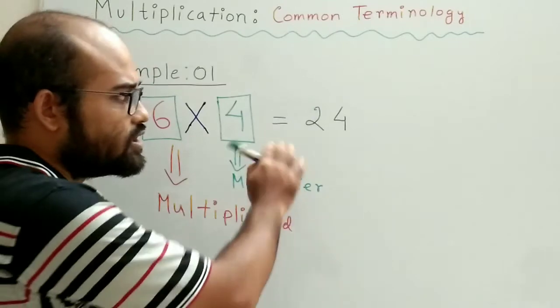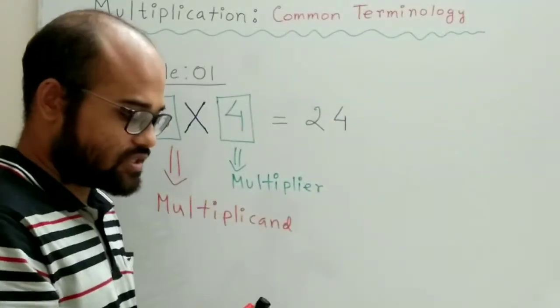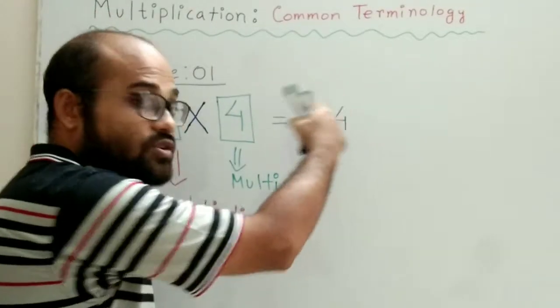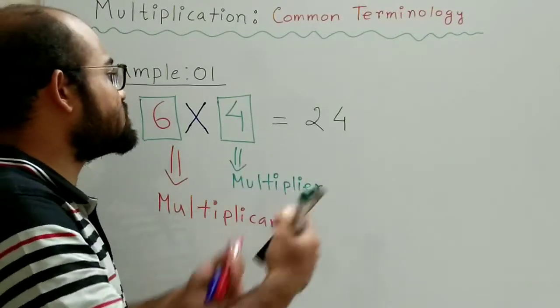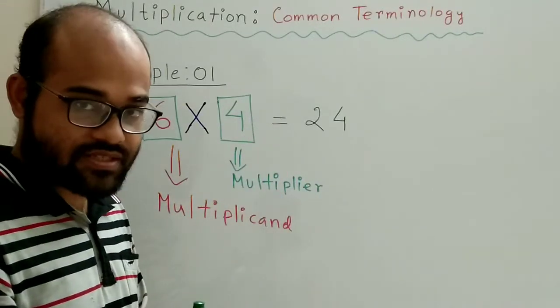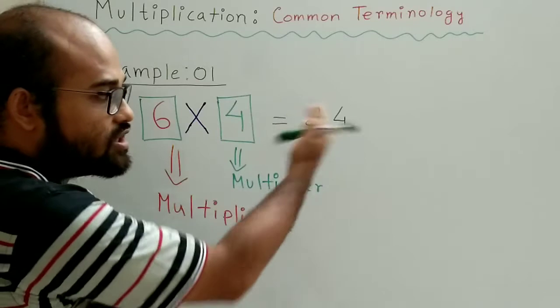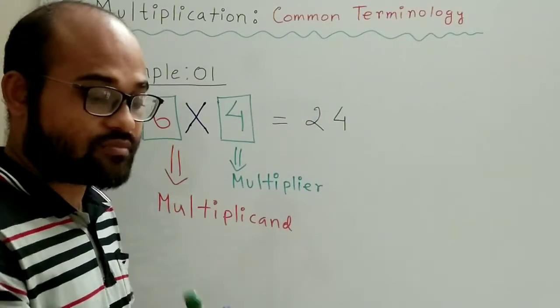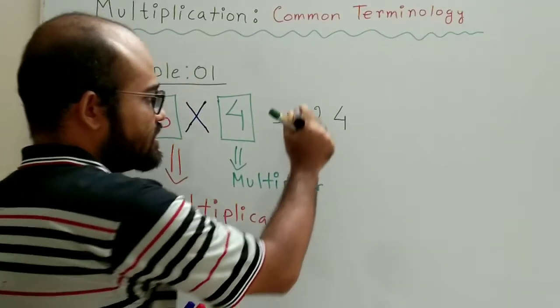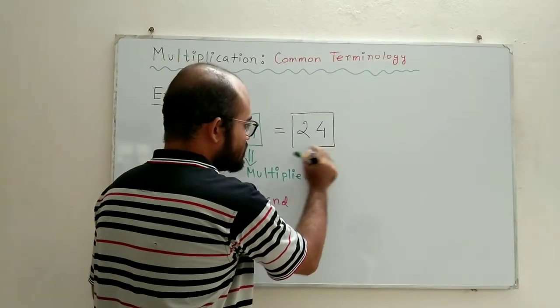Now moving over to the other side of the equals sign, what do we find? We find the number 24 which is the outcome of our multiplication process. So, the outcome of multiplying 2 or more numbers also has a special name. It is called product.